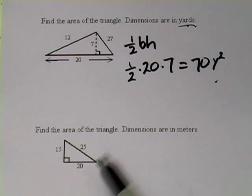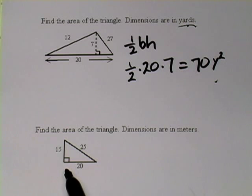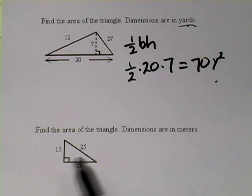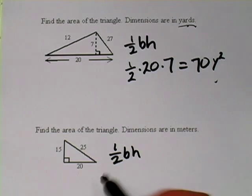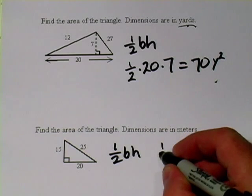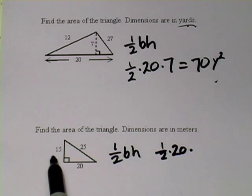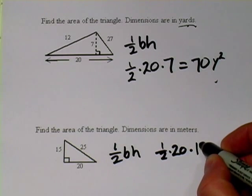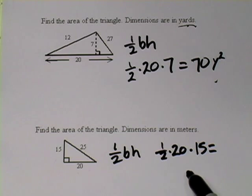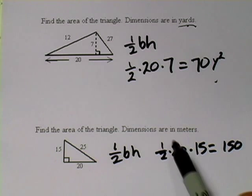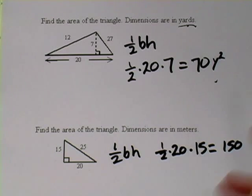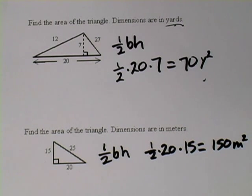Here's another problem, and it's pretty much the same except in this case we have a right triangle. The thing about the right triangle is that the height of the triangle is going to be one of the sides. We'll use the same formula again: one-half times base times height. In this case the base is 20, so one-half times 20 times 15 — the height is 15. If you plug that into your calculator, 0.5 times 20 times 15, you're going to get 150. The units are meters, so that would be square meters. And that's how to find the area of a triangle.